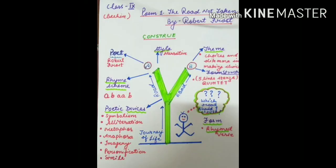Let's look at the construction of the poem. Poet: Robert Frost. Style: narrative — the poet himself narrates his experience. Theme: choices and dilemma in making the right choice. Structure: quintet or quintain — five-line stanzas. The poem is composed of four stanzas, each consisting of five lines. Rhyme scheme: ABAAB. Form: rhymed verse, since there are rhyming words throughout the poem.